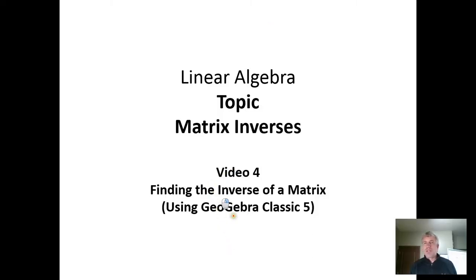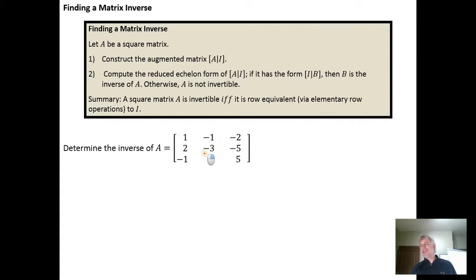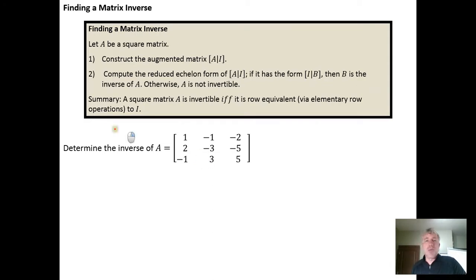In this video, we're going to find the inverse of a matrix, but instead of using Gauss-Jordan elimination, we're going to use GeoGebra Classic 5 to accomplish the task. This is the same matrix for which we found the inverse in the previous video. We're going to do it using GeoGebra Classic 5, which will reveal whether or not I made an error in my arithmetic calculations in the previous video, because I did not check my work.